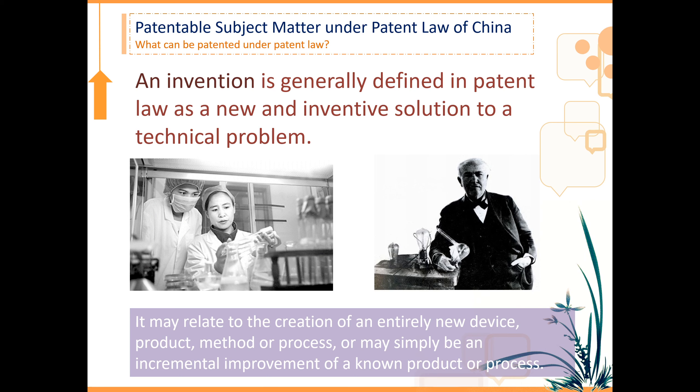In that case, the improver would need permission from the original patent owner to use or license the improved technology to a third party. This can lead to cross-licensing — the improved technology is better, so the original patent holder wants to use it too, and they exchange rights: the improver allows the original owner to use the improvement, and the original owner allows the improver to use the foundational technology. A real example is Huawei technology with Ericsson and Intel, who have many cross-licensing arrangements.